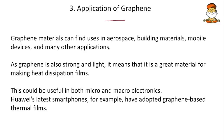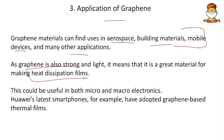Applications of graphene: graphene is one of the important nanoparticles — a single atomic layer of carbon made up of hexagonal rings. Graphene materials find uses in aerospace, building materials, and mobile devices, mainly due to its tensile strength. Because graphene is strong and light, it is a great material for making heat dissipation films or heat sinks in electronic gadgets. It can be used in both micro and macro electronics as a conductor.